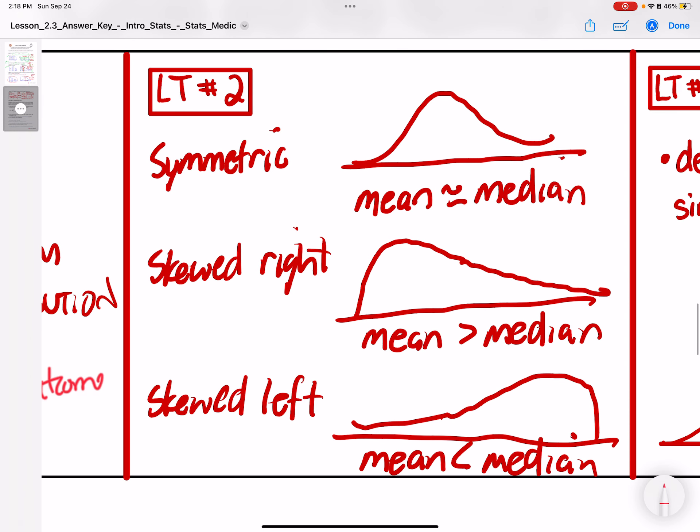The second learning target are the three types of distributions I just discussed. Symmetric is where the mean and median are approximately the same. Skewed right is when the median is here but the mean is pulled to the right because of these outliers, like the example I did with 1, 2, and 30. Skewed left is completely the opposite, where the mean is pulled to the left because of the low outliers.